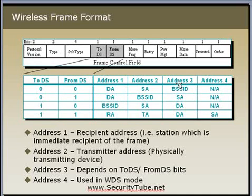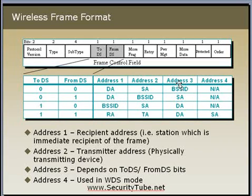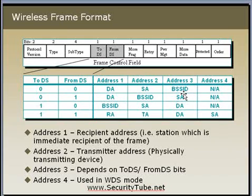In From DS frames — sent by the AP to the client — the packet originates from another host or gateway. Address 1 is the destination, which is the client's address. Address 2 is the source, which is the BSSID. Address 3 is the gateway's MAC or the host machine that wants to communicate with the client.